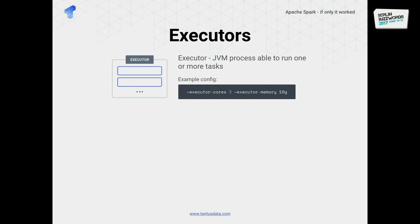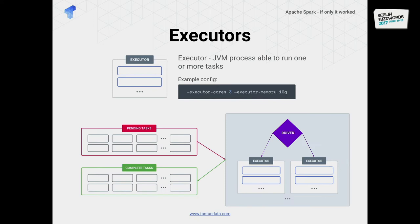Tasks get run in executors. Each executor can run one or more tasks at a time — and I want to emphasize that 'at a time' part. It means Spark can reuse the same executor to run task after task after task, picking up tasks from the pending queue. This is quite a nice improvement compared to Hadoop — you don't have to spawn a new JVM for each task, you can reuse the same JVM. And everything is orchestrated by a single driver process.